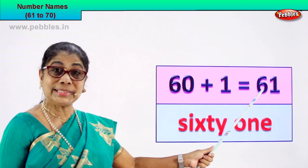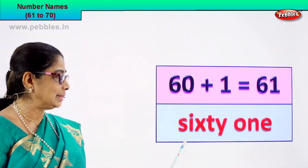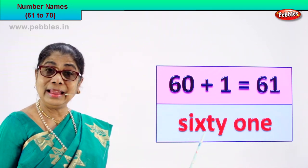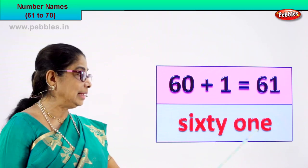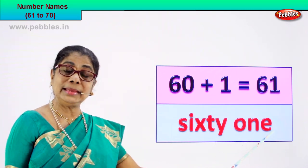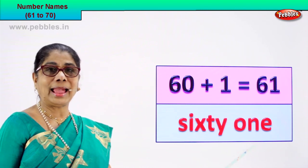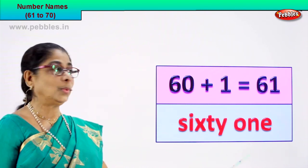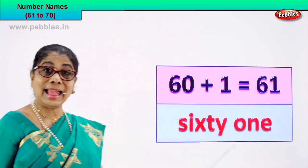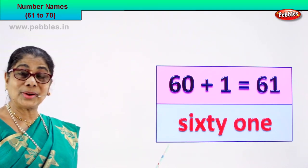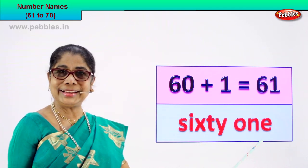You already know 60. All you have to do is add 1. 61. How do you spell 60? S-I-X-T-Y, 60. O-N-E, 1. You already know 60 — just add 1. 61. 6 and 1. 61 is the numeral and you learn to write its name: sixty-one.